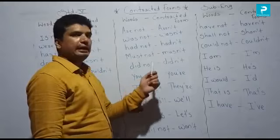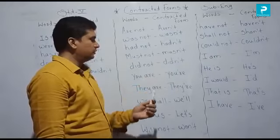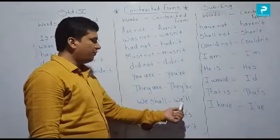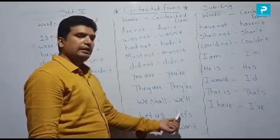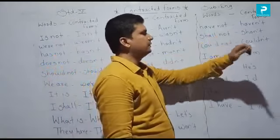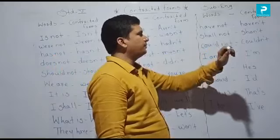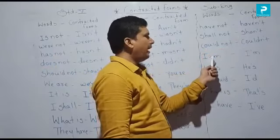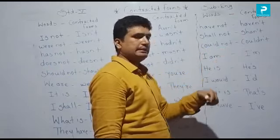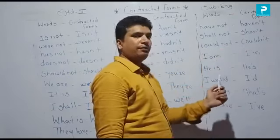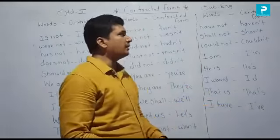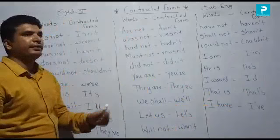Continuing: You are → you're. They are → they're. We shall → we'll. Let us → let's. Will not → won't. Have not → haven't. Shall not → shan't. Could not → couldn't. I am → I'm. He is → he's. I would → I'd. That is → that's. I have → I've. So these are the words and their contracted forms — also called contractions, abbreviations, or short forms.